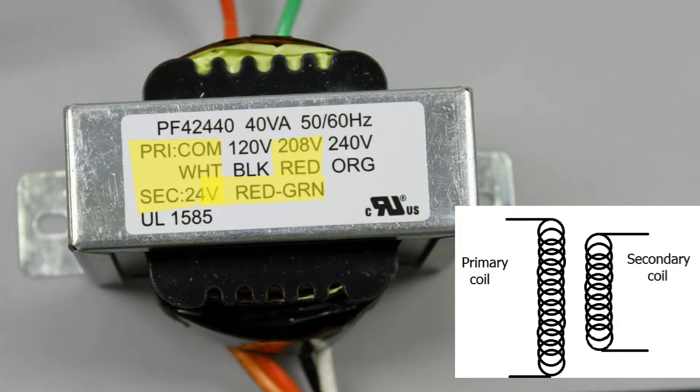If we have 208 volts, we use the red and white wire, and we'll get 24 volts out. That's about an 8 and 2 thirds to 1 ratio. If we have 240 volts, we use the white and orange. That's a 10 to 1 ratio.